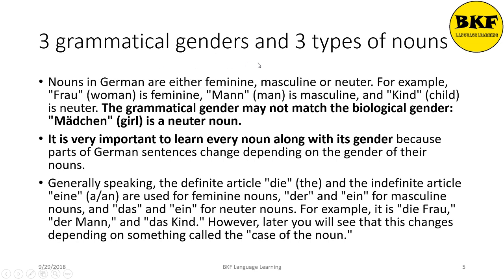Three grammatical genders and three types of nouns. So nouns in German are either feminine, masculine, or neuter. For example, Frau, which is a woman, is feminine. Mann, which is a man, is masculine. And Kind, which is a child, is neuter. So the grammatical gender may not match the biological gender. For example, Mädchen, which is a girl, is a neuter noun. So it is very important to learn every noun along with its gender.